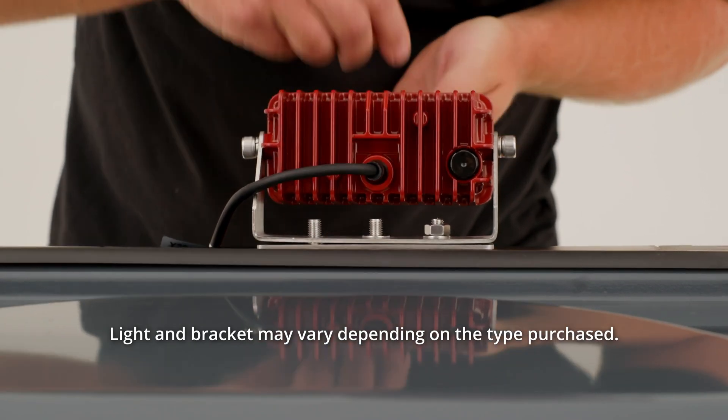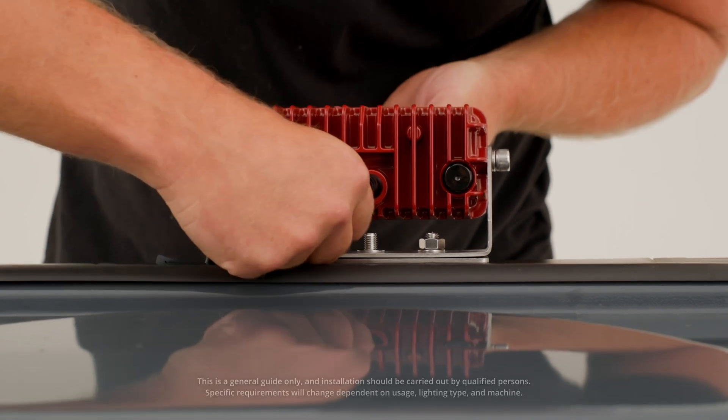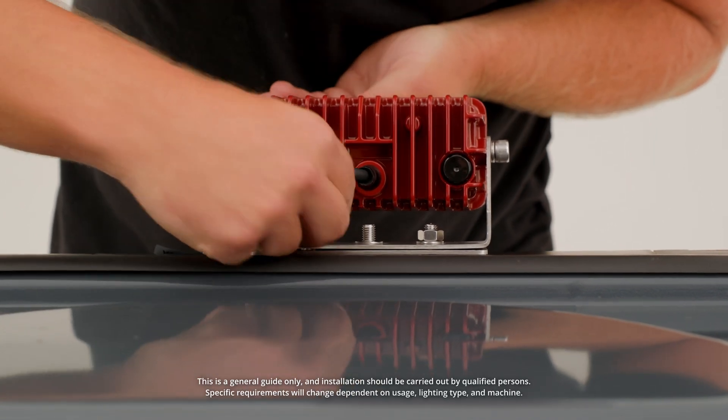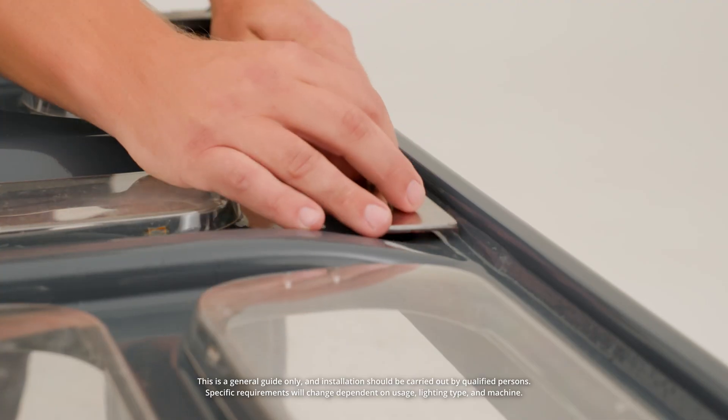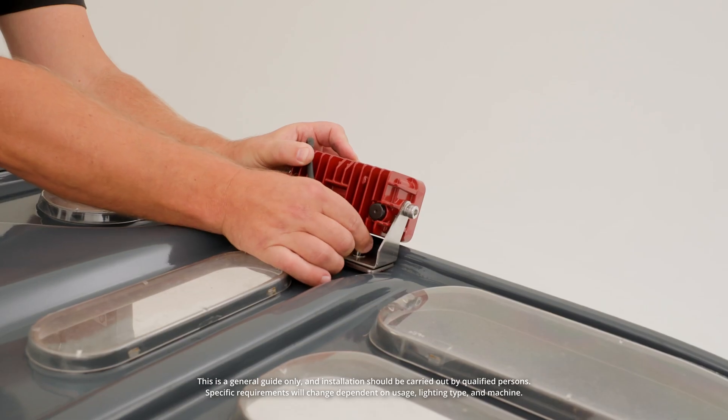Mount the light utilizing the nuts and washers provided. A liquid thread locker like Loctite can be used to further secure the nuts if required. Repeat the process for all lights and brackets.